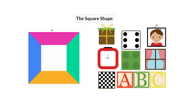Now, let's take a look at the pictures that we have here. Here we have some objects that have a square shape. Let's start with the first picture. What's this? This is a present, and what's the shape of the present? It is a square. What's this? This is a clock, and the shape of the clock is a square.